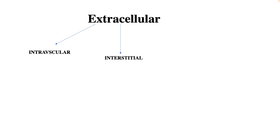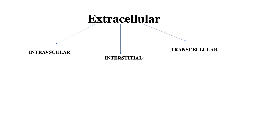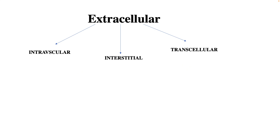Extracellular fluid is a bit more complicated than intracellular fluid. The extracellular fluid is composed of three compartments: the intravascular space, the interstitial space, and the transcellular space. Intravascular and interstitial spaces together make up 97.5% of the ECF, while transcellular fluid makes up only about 2.5%.